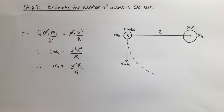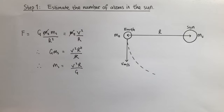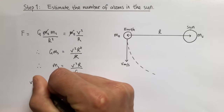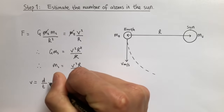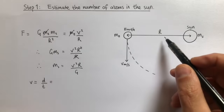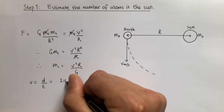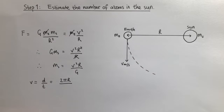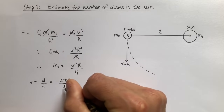Next, we want to replace V with an expression involving R and T, where T is the time it takes for the Earth to complete one orbit around the Sun. Given that the Earth is moving with a constant speed, the speed is equal to the distance divided by the time. The distance around one complete orbit is the circumference of the circle of radius R, which is 2πR. The time taken for the Earth to complete one orbit is the time period — in the case of the Earth, that's just one year.